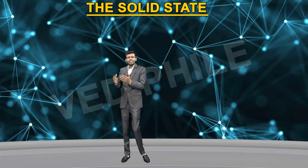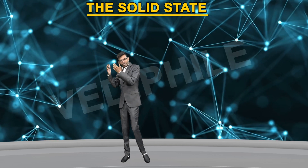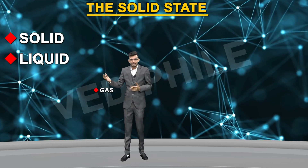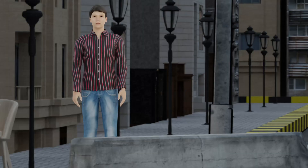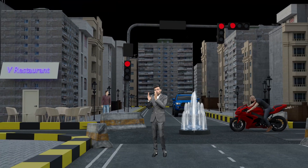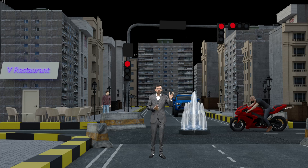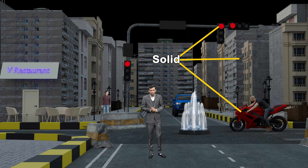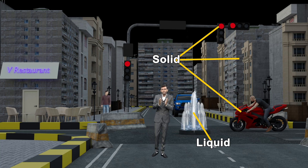What we see around us is basically in either solid, liquid, or gaseous state. Just imagine a boy standing on a street — he is looking at buildings, traffic signals, and a bike. All these things are in solid state. But water flowing through a fountain is in liquid state.